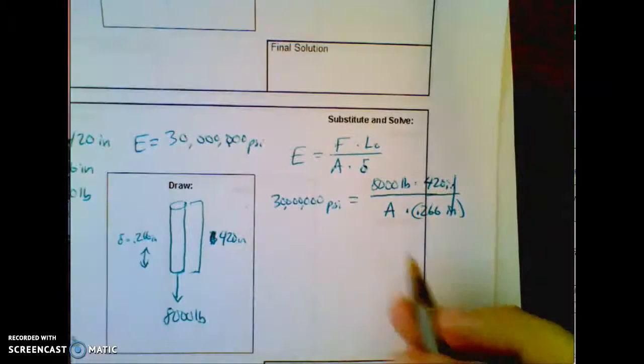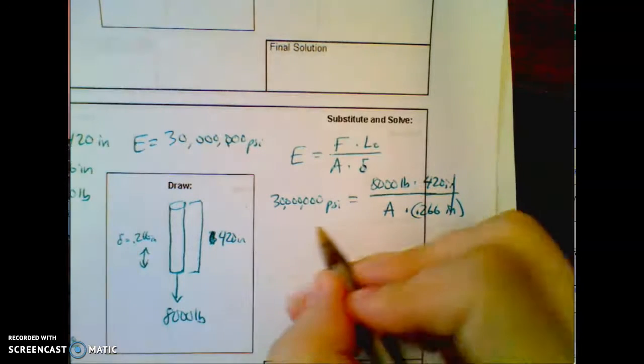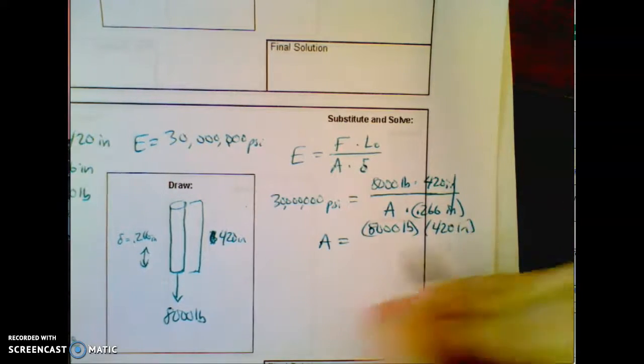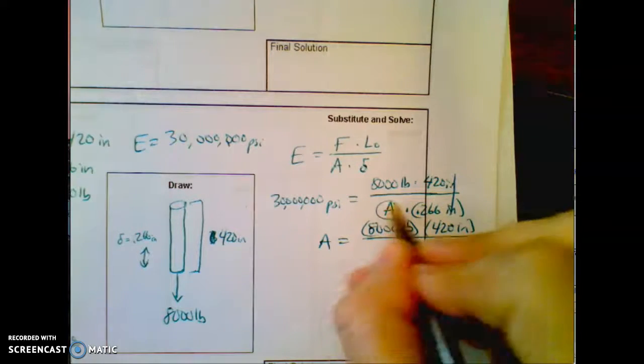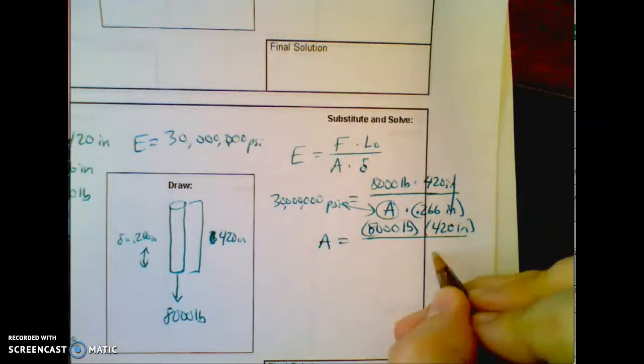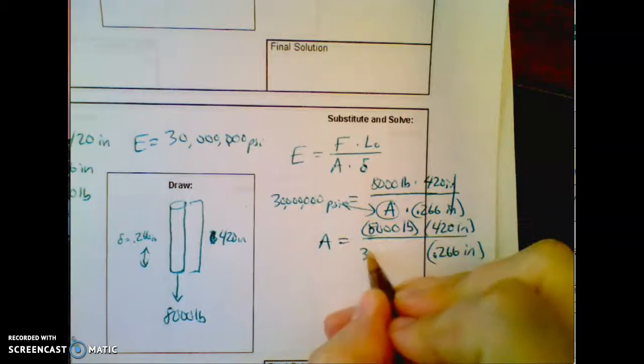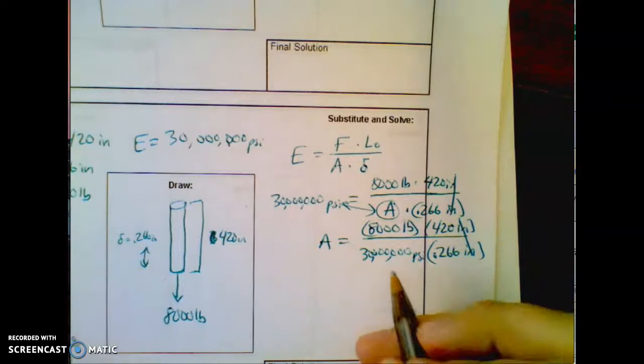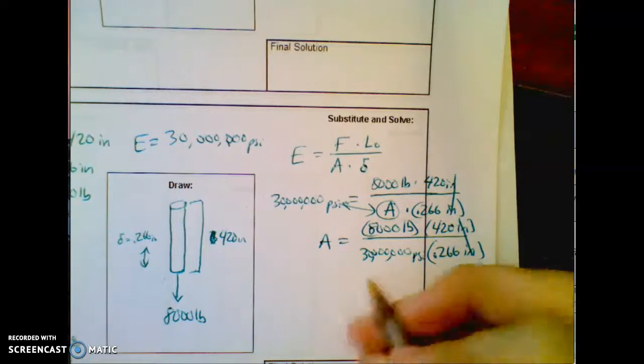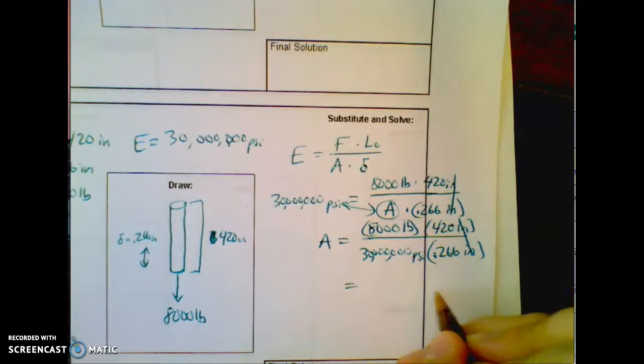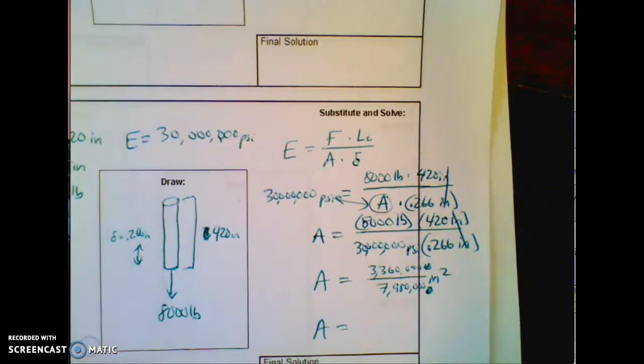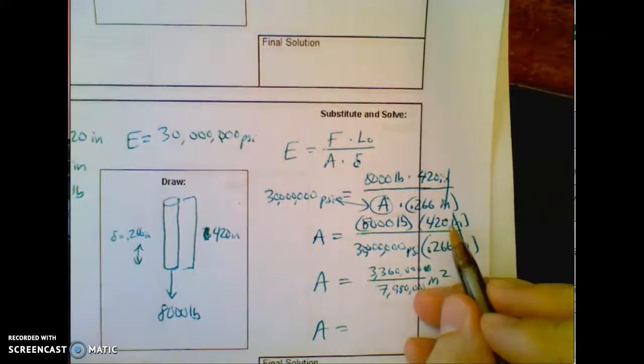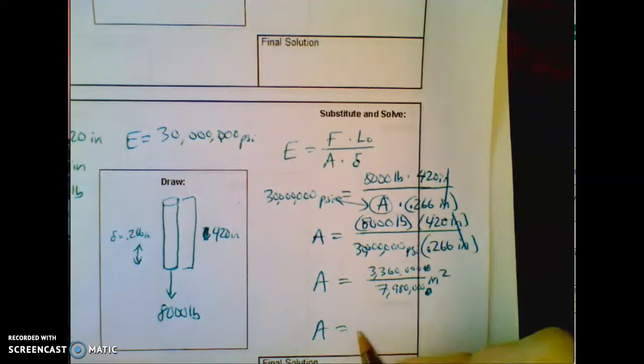I'll do the old western switcheroo here. So area is going to equal 8,000 pounds times 420 inches. Remember when the thing you care about is in bottom, you switch it. And I'm just switching the A with the other side. You're allowed to leave that 0.266 inches. This is a good math trick to learn. And 30 million PSI. Oh wait. Inches went away. So my pounds will cancel with pounds. You'll have square inches in the end because you're 1 over square inches. So my area is going to be a certain amount of inches squared. Let me get the calculator and do that real quick.